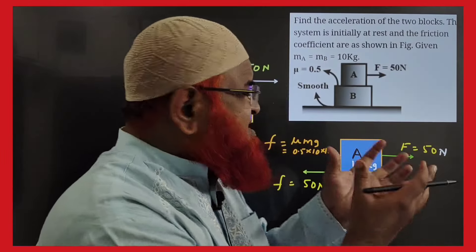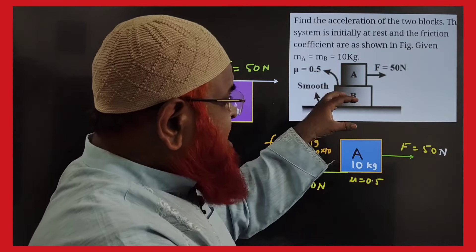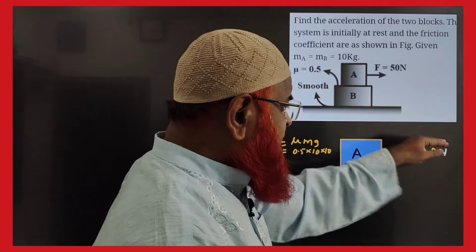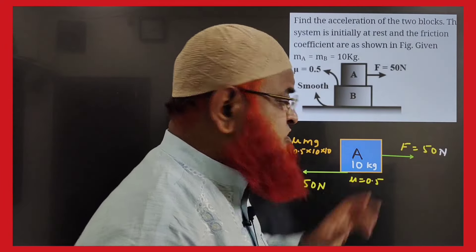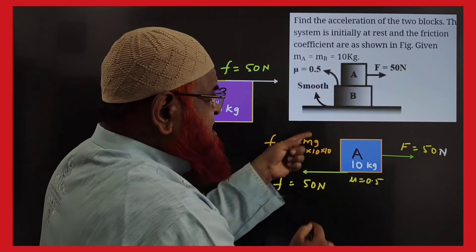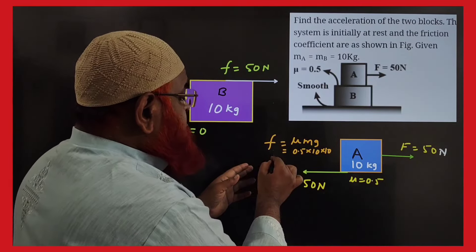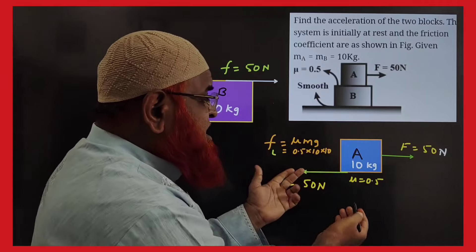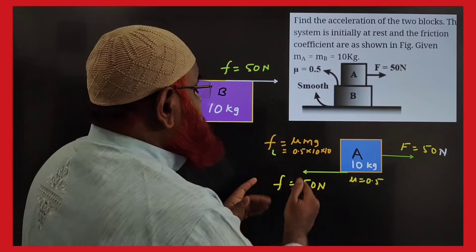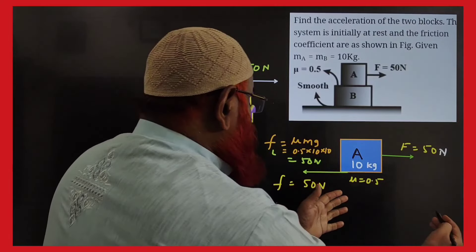This is a block-over-block concept: one block rests on the other, both having the same mass. A force of 50 newtons is applied. The limiting friction between the blocks is mu×mg. With mu = 0.5 and mass = 10 kg, limiting friction equals 50 newtons.